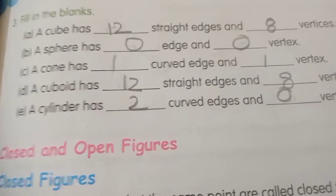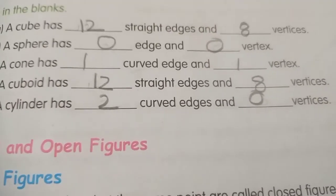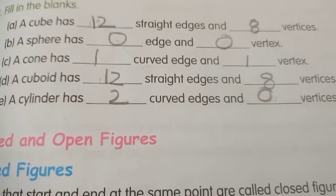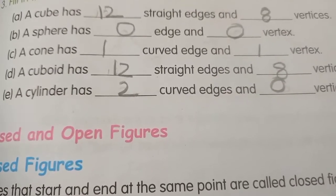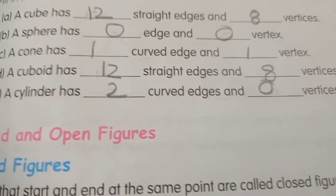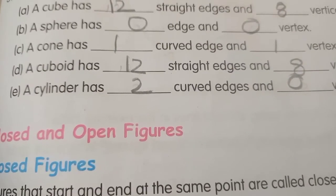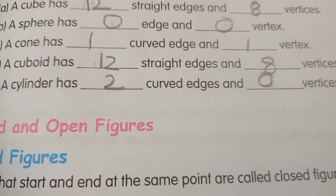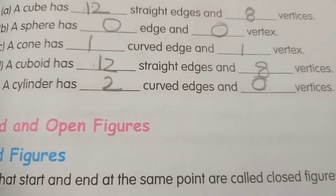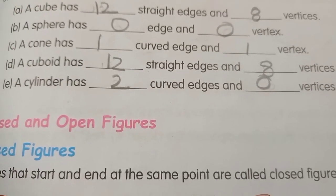A cuboid has 12 straight edges and 8 vertices. A cylinder has 2 curved edges and 0 vertices.